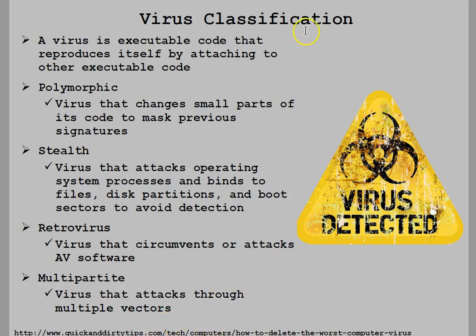Here are some definitions of the different classifications of viruses. Viruses are very clever — they can reproduce by attaching to other executable code. Unlike worms, a virus needs to attach itself to some sort of object. It's very similar to a biological virus in humans: it needs to attach to a host in order to infect it.